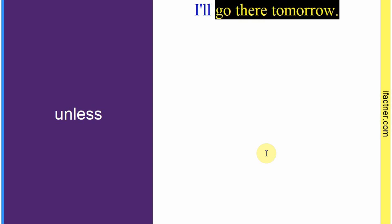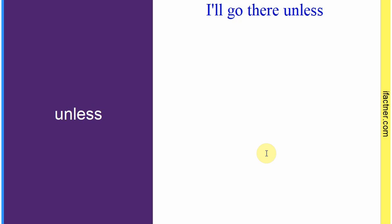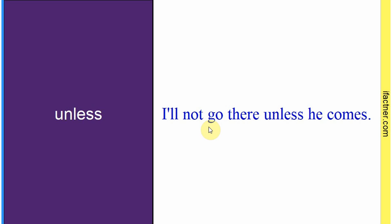Word hai: 'unless'. Sentence: 'I will not go there unless he comes.' Mein wahan nahin jaunga — unless woh yahan aaye. Iska matlab yeh hai ki agar toh woh yahan pe aaye toh mein chala jaunga, warna mein nahin jaunga. Toh 'unless' ka matlab hota hai 'jab tak woh cheez na ho'. Sentence banaaya: 'I will not go there unless he comes.'